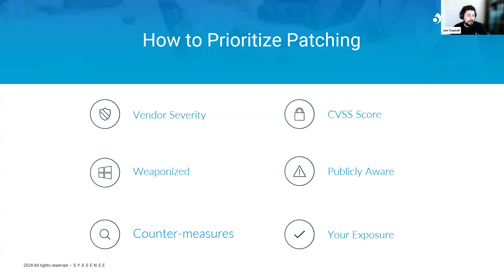A zero-day vulnerability is one that is actively exploited by attackers before the vendor has had a chance to develop or distribute a patch. Essentially, it's an attack that occurs on the same day that the vulnerability is discovered, leaving zero days for the vendor to respond. This makes zero-day exploits particularly dangerous, as systems are left vulnerable to attacks with no immediate solution available.